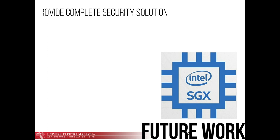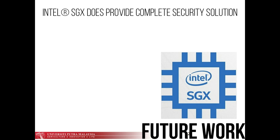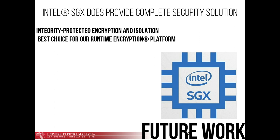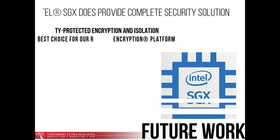For future work, Intel SGX does provide complete security solutions by implementing integrity-protected encryption and isolation directly at the processor level. Intel SGX not only reduces the TCB to just the processor and your applications, but also enables isolation that allows you to split up your application, achieving less privilege. Intel SGX is not only the best choice for a runtime encryption platform — it is currently the only choice. In the future, it is entirely possible that runtime encryption will be made available on other platforms that are sufficiently secured.